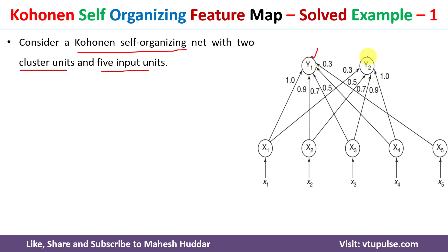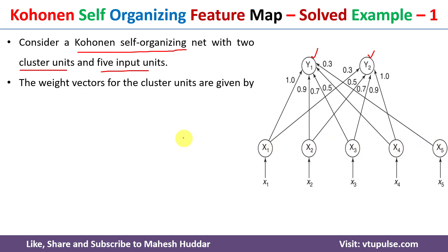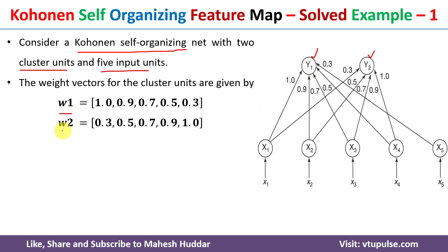Y1 and Y2 are the cluster units; X1, X2, X3, X4, and X5 are the input units. The weights for these cluster units are given to us: W1 is the weight with respect to Y1, and W2 is the weight with respect to Y2.